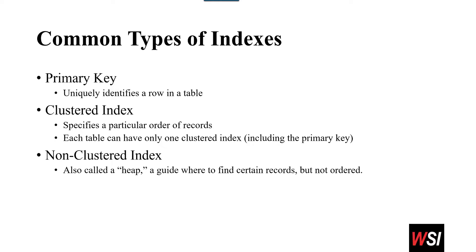The first thing to consider is something called a primary key. A primary key is either a column or set of columns that uniquely identifies a particular row in a table. Mostly, you'll see this as a column that says ID — it might say person ID, asset ID, or whatever. That's what a primary key is. Now, a clustered index will include a primary key, and what a clustered index basically means is it specifies a particular order of records.